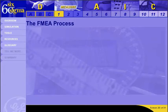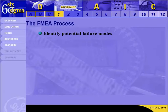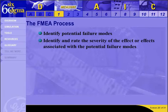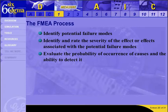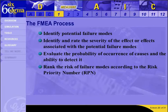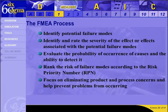So, how does the FMEA work? In short, it identifies ways in which a product or process can fail and then plans how to prevent those failures. The key steps are: identify potential failure modes; rate the severity of their effect; evaluate objectively the probability of occurrence of causes and the ability to detect the cause when it occurs; rank the risk of failure modes according to a numerical index called the risk priority number, or RPN; and focus on eliminating product and process concerns and help prevent problems from occurring.